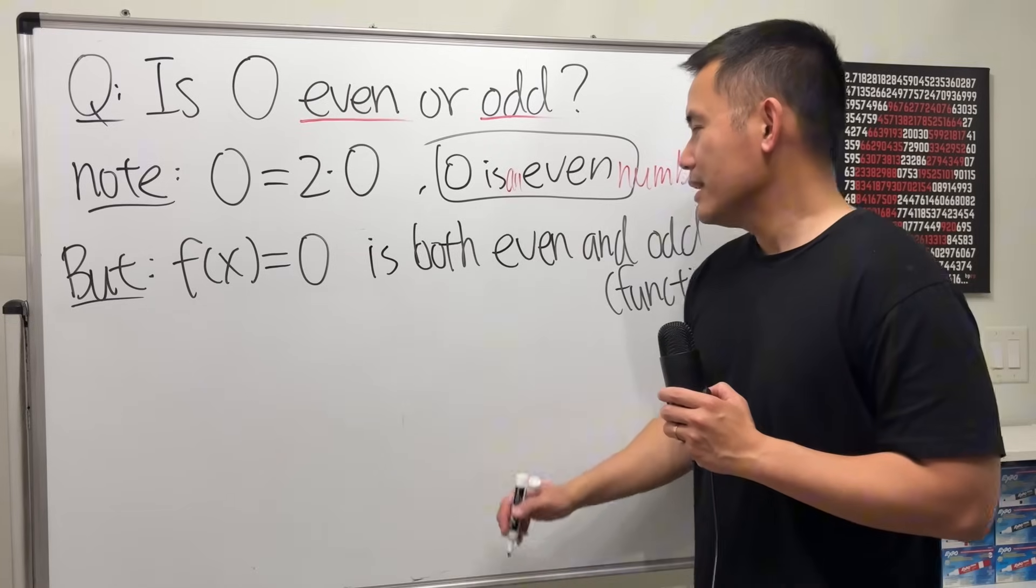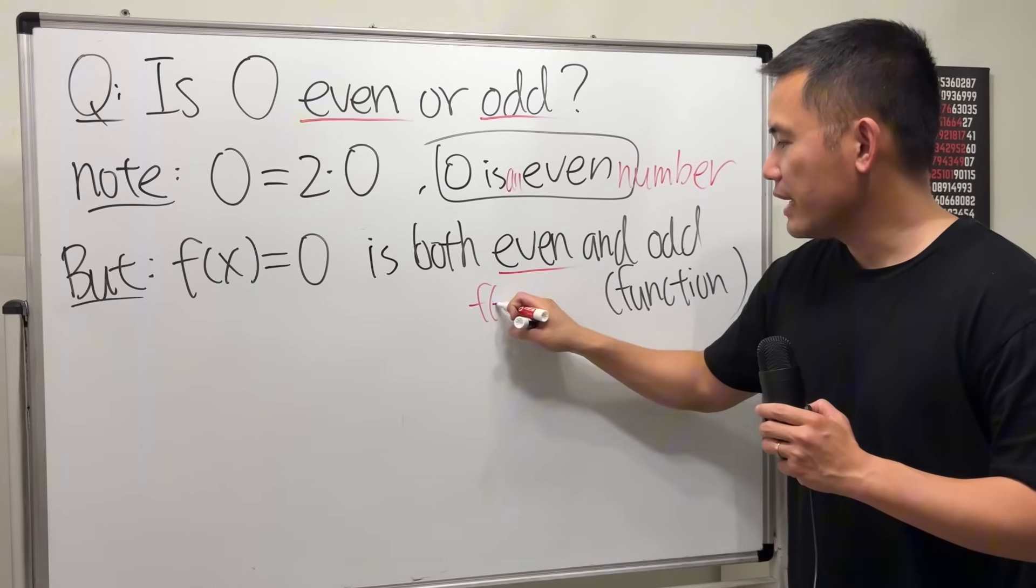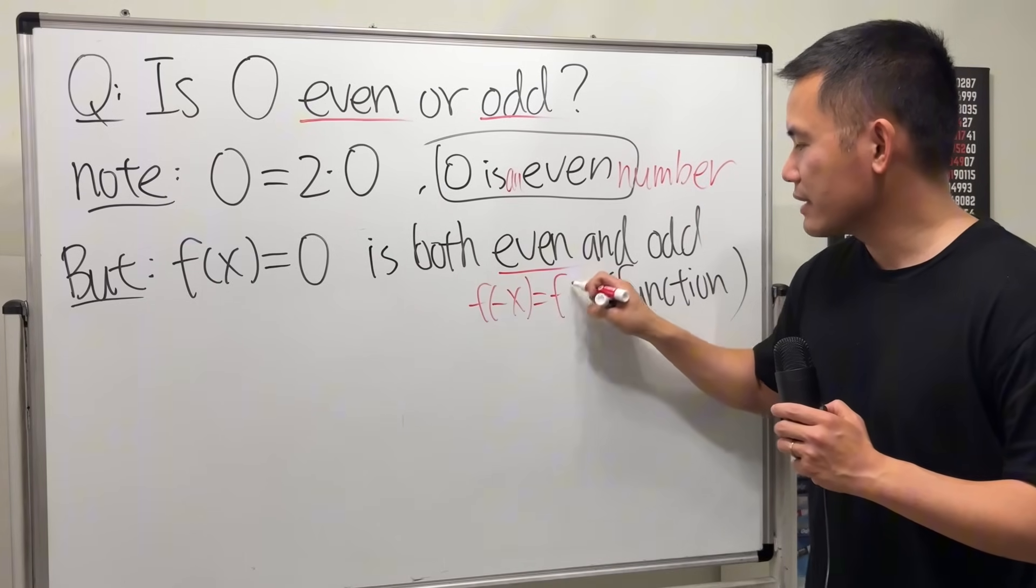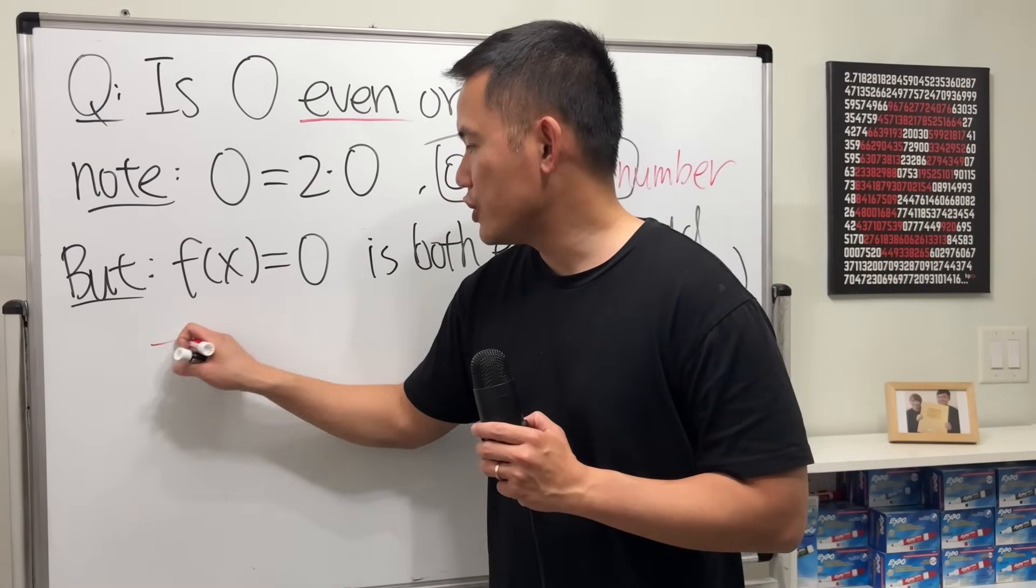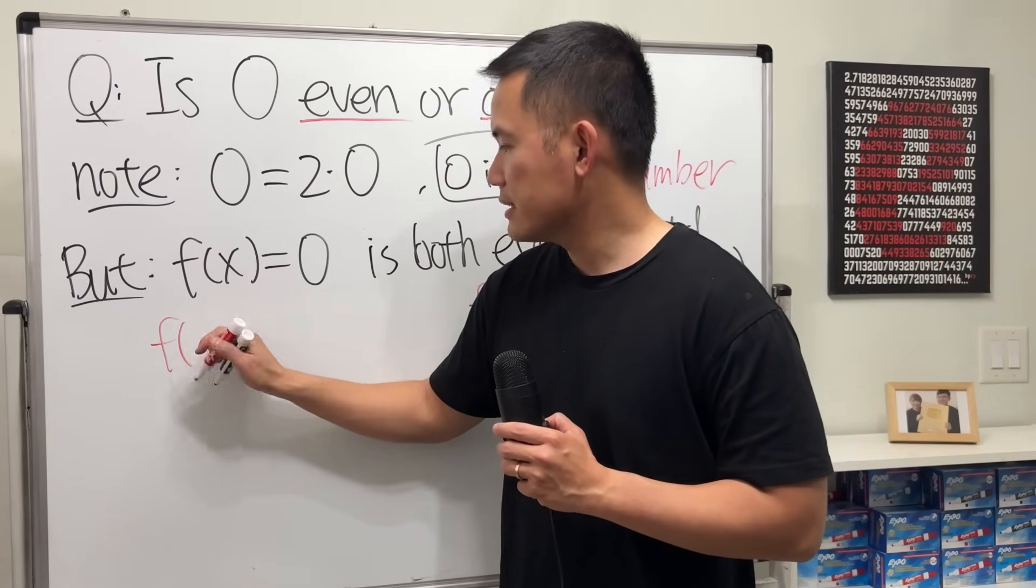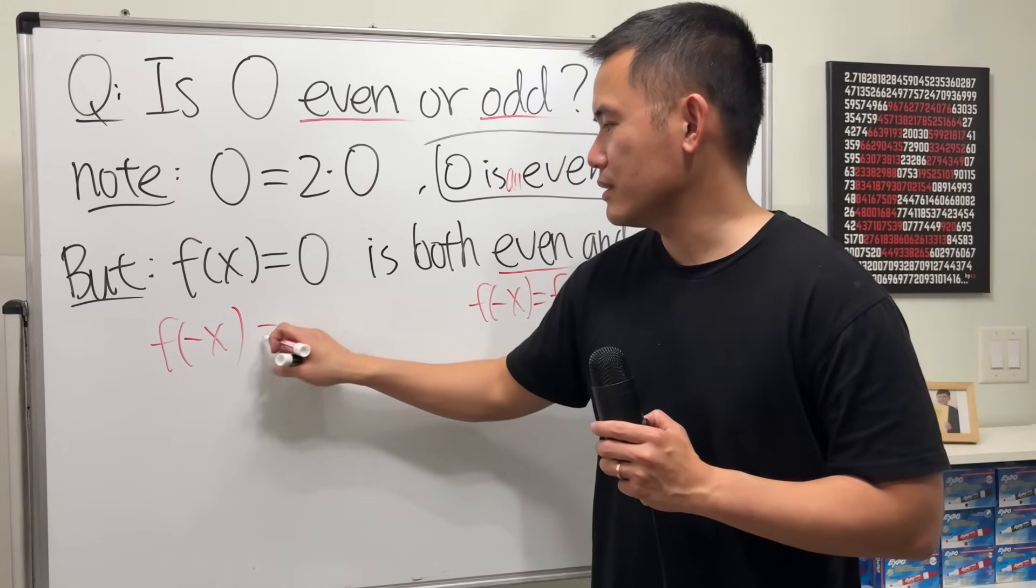Why though? Well, let's check the definition of even function. This right here means f of negative x is equal to f of x. So let's have a look. f of x is equal to 0. If I want to check f of negative x, well, guess what? That will still be just 0 because there's no x.